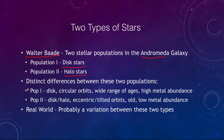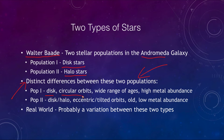We found that there is a distinct difference between these two populations. Population one stars are in the disk, they have circular orbits, they have a very wide range of ages from very old stars to very young stars, and they have a high metal abundance.